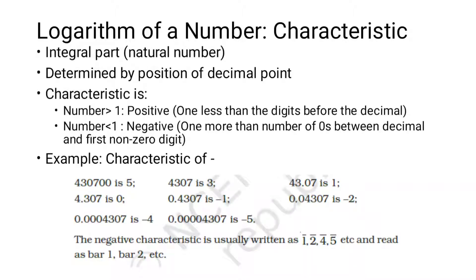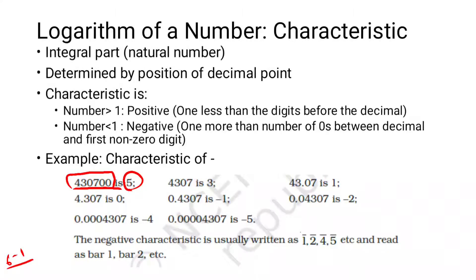Look at this number. Count the digits: one, two, three, four, five, six — this is a six-digit number. So we do six minus one, which gives us a characteristic of five.